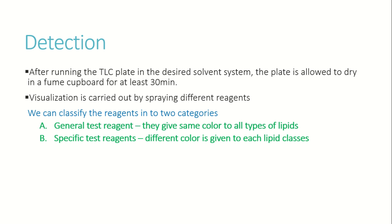For detection in TLC, we spray with different reagents. These reagents fall into two categories: general test reagents and specific test reagents. General test reagents give the same color to all types of lipids, while specific test reagents give different colors to different classes of lipids.